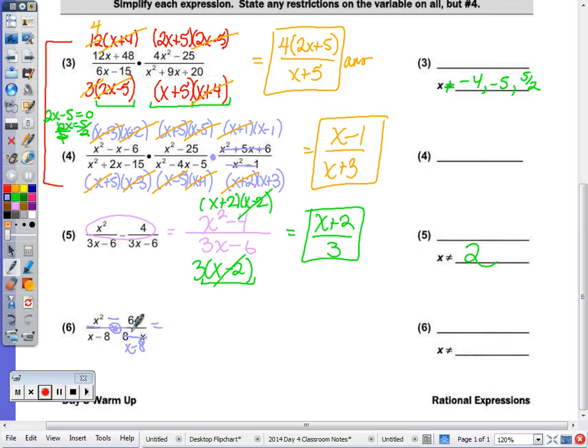So now I have x squared minus 64 all over x minus 8. And x minus 8, the restriction would be 8. If x was 8, then I'd have 8 minus 8, 0. We don't want that to happen. But we factor, this is DOTS, x plus 8 times x minus 8, cancel. And final answer is going to be x plus 8.